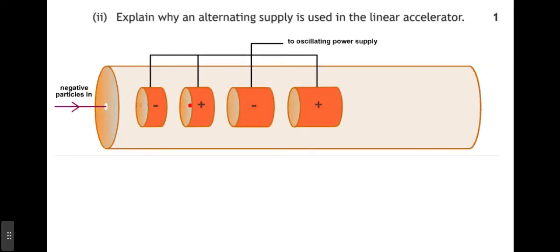Part 2. Explain why an alternating supply is used in the linear accelerator. Well, we need to think what's happening here. So, here's a little animation.